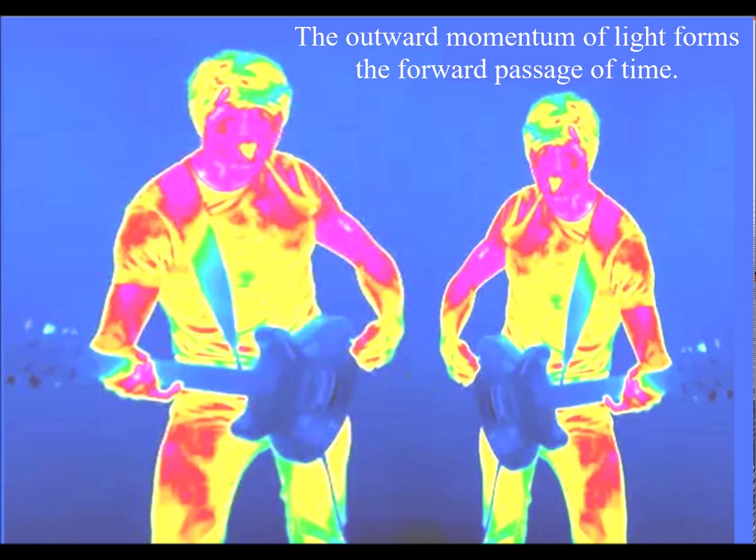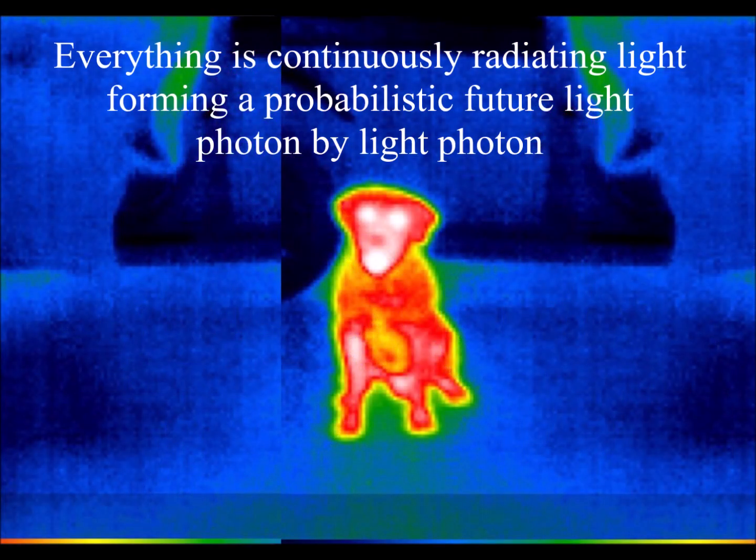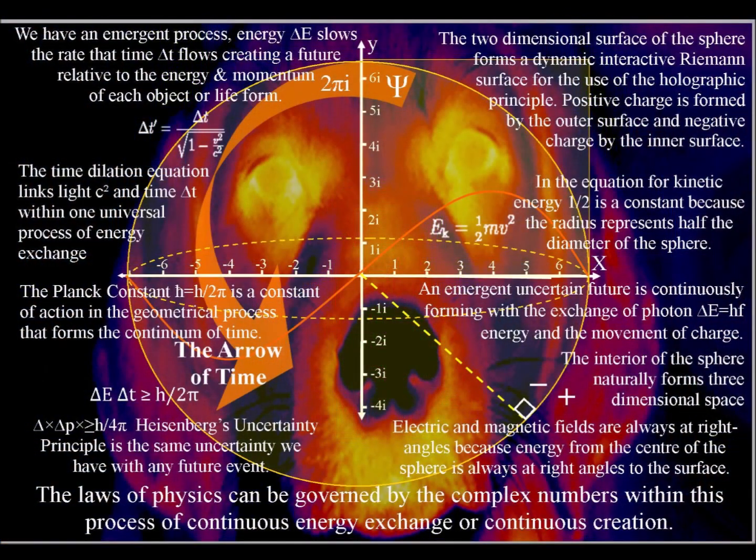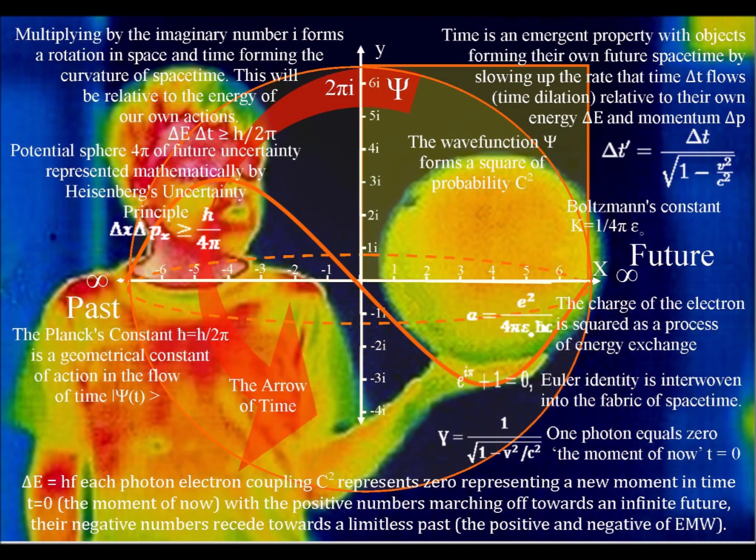If we think of the universe as a continuum based on a process of continuous energy exchange, there must be a starting point where the future emerges and the past becomes part of history. The spontaneous absorption and emission of light can form this process that forms our ever-changing world, with light photon energy interacting with matter in the form of electrons representing the starting point.